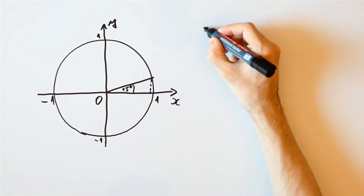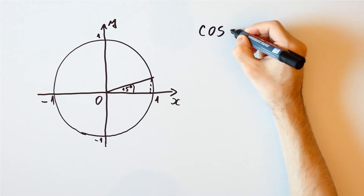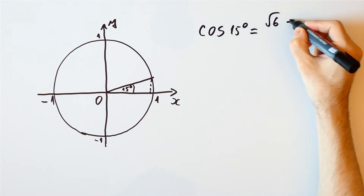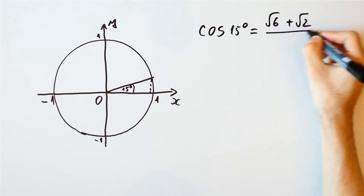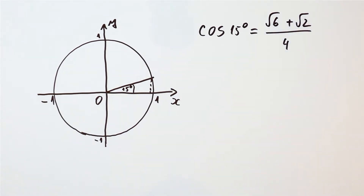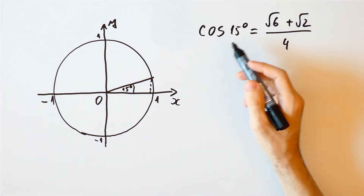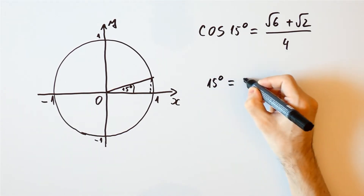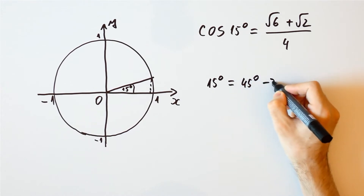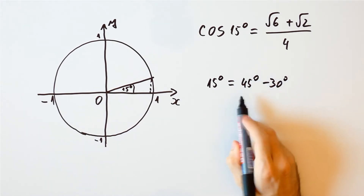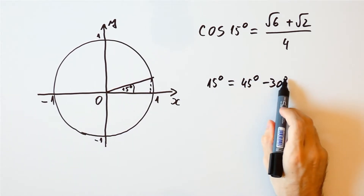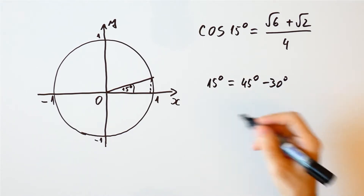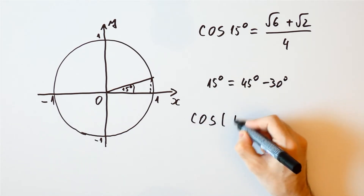We previously showed that the cosine of 15 degrees is equal to the square root of 6 plus the square root of 2 over 4. Now we'll show another way to obtain that. Note that 15 degrees is equal to 45 degrees minus 30 degrees, so we need to calculate the cosine of 45 degrees minus 30 degrees, and in order to do that we'll derive the formula for the cosine of alpha minus beta.